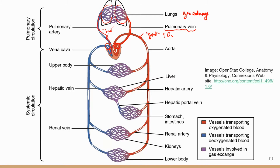The atria — atria is plural, atrium is singular — are the two superior, smaller receiving chambers. The right atrium receives blood from the superior vena cava and inferior vena cava, and the left atrium receives blood from the pulmonary veins. Once blood enters the left atrium, that concludes the pulmonary circuit — it starts from the right atrium and ends at the left atrium on the other side.